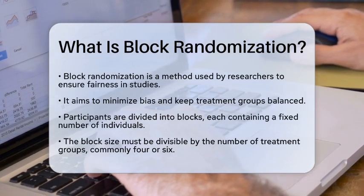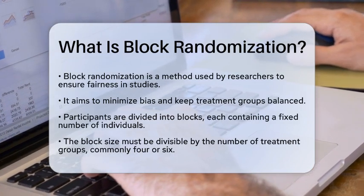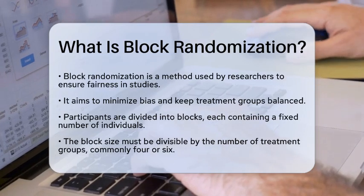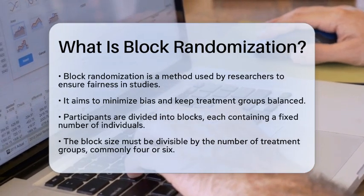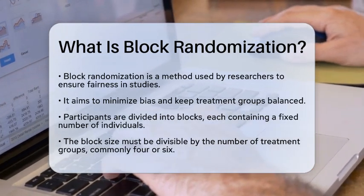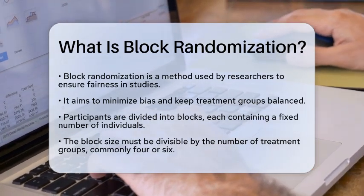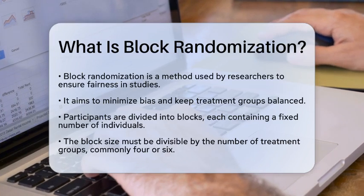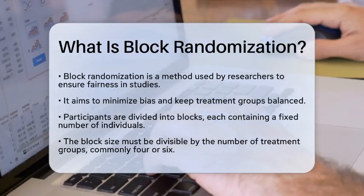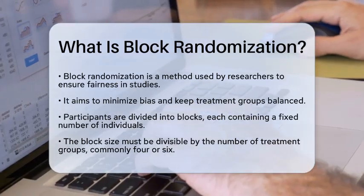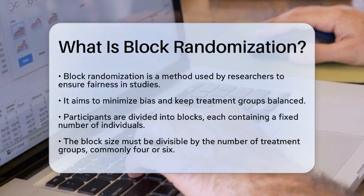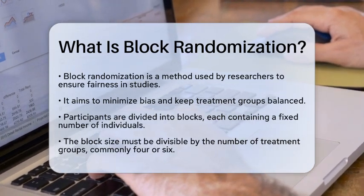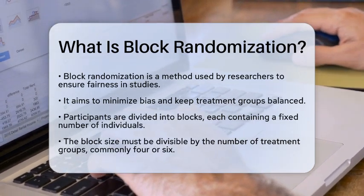Block randomization starts by dividing participants into blocks. Each block contains a fixed number of participants. The block size must be divisible by the number of treatment groups. Common sizes are four or six participants per block. This ensures that each treatment group receives an equal number of participants by the end of the study.